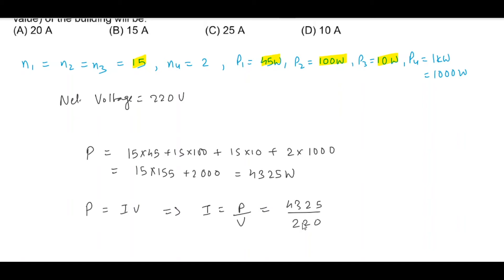Okay, 220 times 20 is 440 - right, 220 into 20 is 4400, which is slightly greater than 4325.